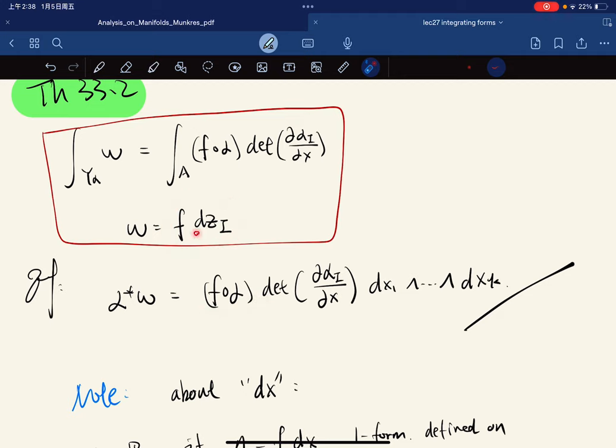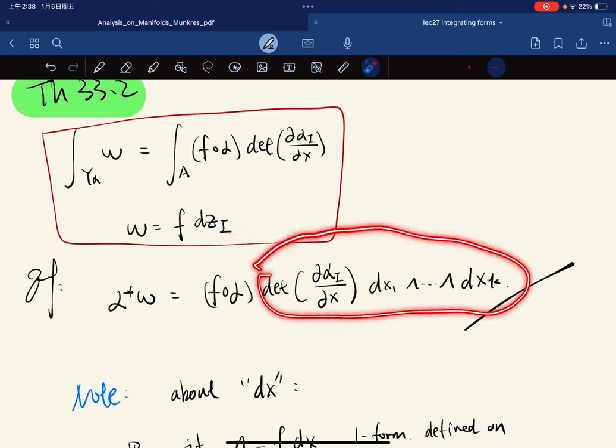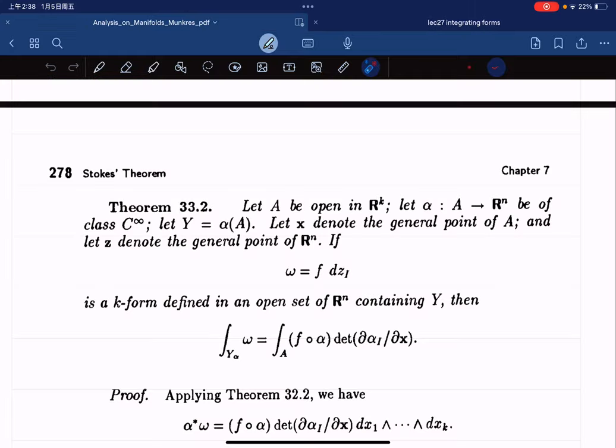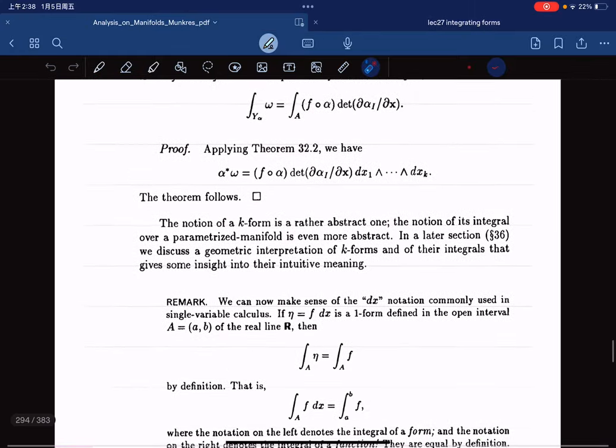And alpha star of this. But this is basically this by theorem 32.2. Okay? So we're going to finish everything for this lecture. It's pretty quick.